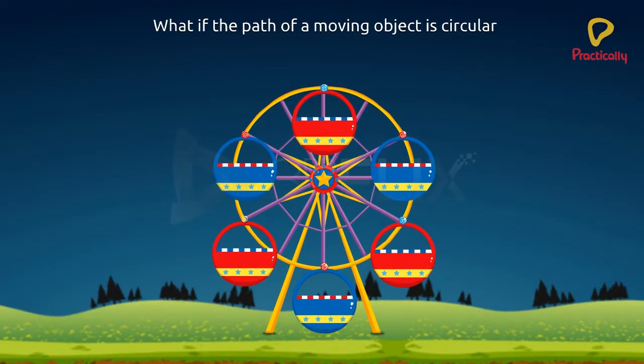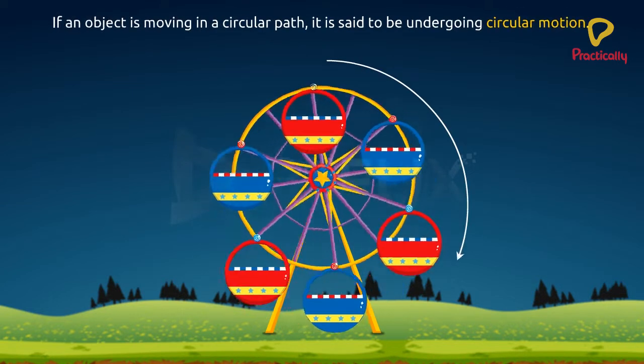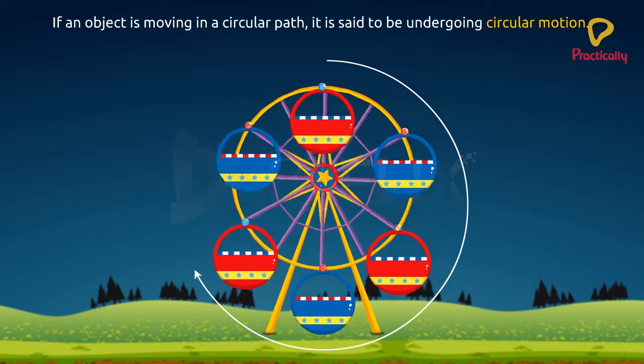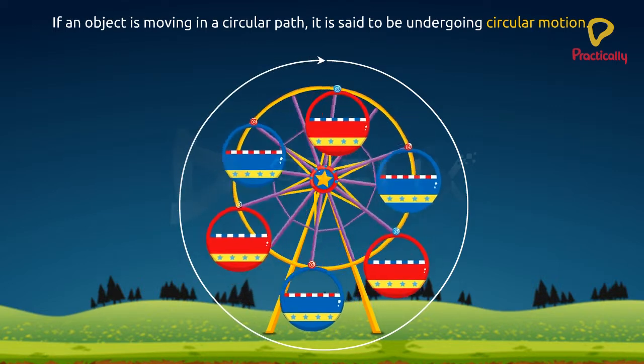What if the path of a moving object is circular? If an object is moving in a circular path, it is said to be undergoing circular motion.